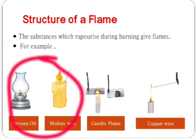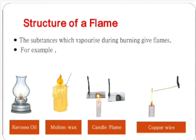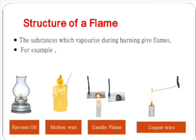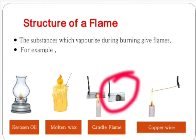Next, hold a glass plate or glass slide into the luminous zone of the flame and hold it there with a pair of tongs for about 10 seconds. Observation: a blackened ring is formed on the glass slide. Conclusion: unburned carbon particles deposit on the glass slide in the luminous zone of the flame.